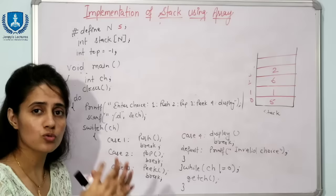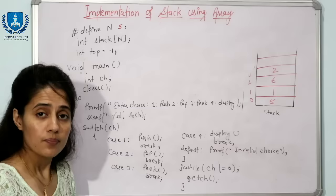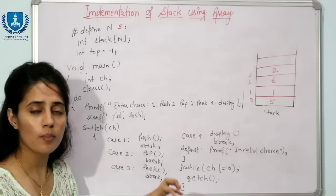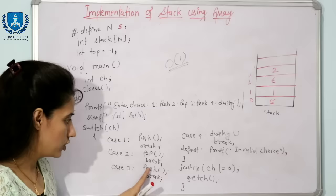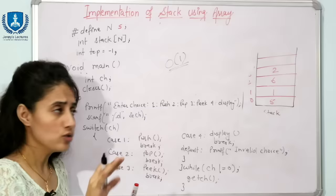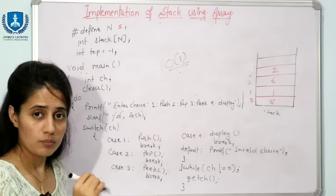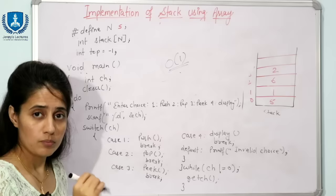This is how we implement the stack using arrays. In the next video we will see how to implement stack using linked list. The time complexity for push, pop, and peak operations is O(1) because no loops are used in those operations. For searching or displaying the content it is O(n).